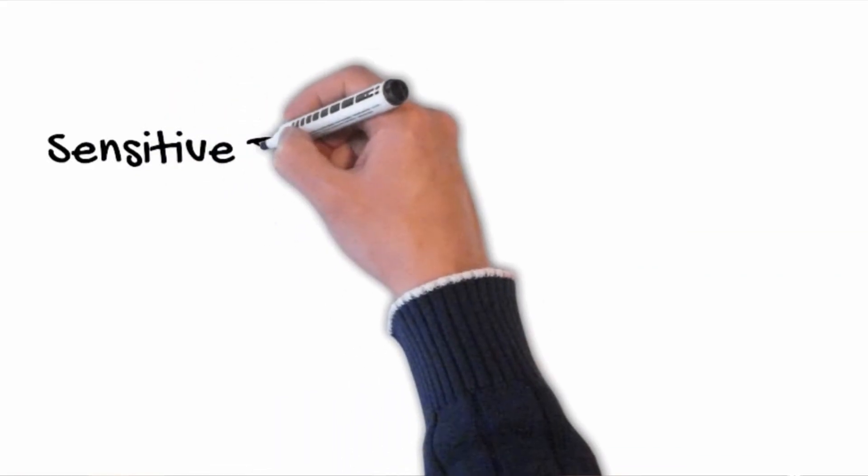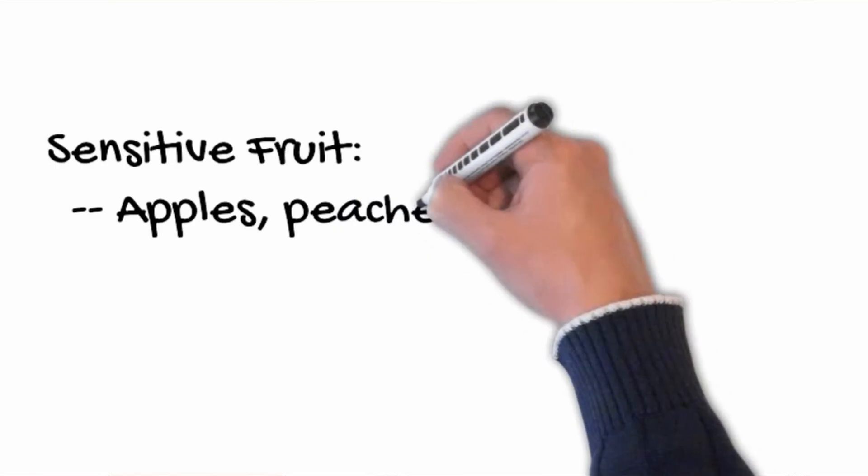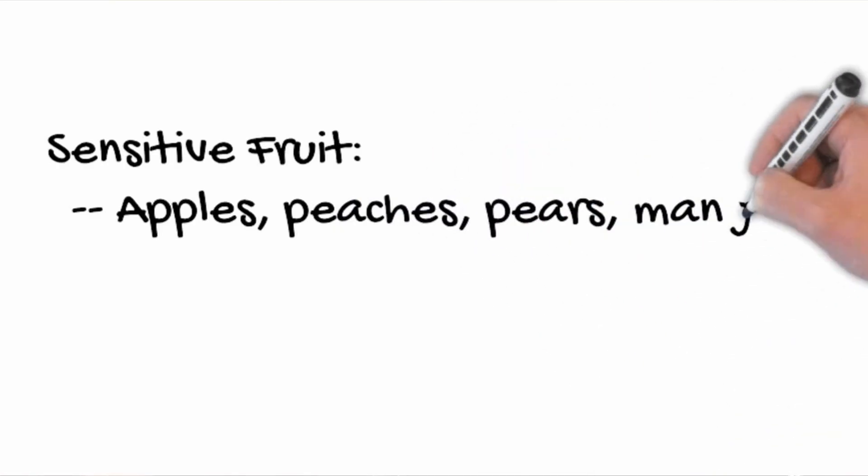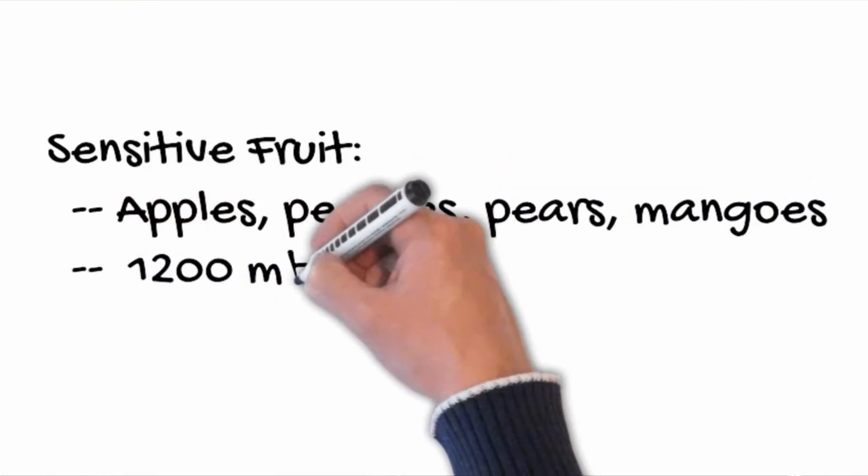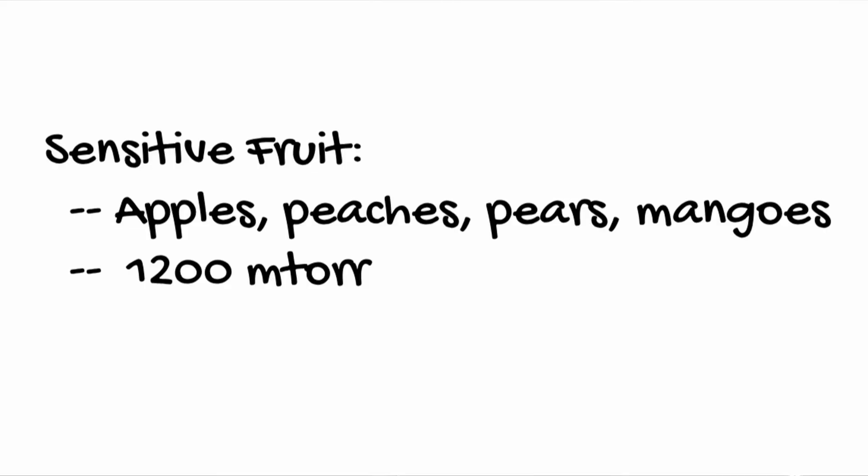For sensitive products like fruit — apples, for example — I never run my machine higher than about 1,200 millitorr. It might be even a bit lower for mangoes. That's because you can get surface damage and a little bit of collapse, since the flesh of the apple is a lot more sensitive to collapse than protein is. Even though the sublimation temperature is still plenty low, the flesh can shrink a little bit.